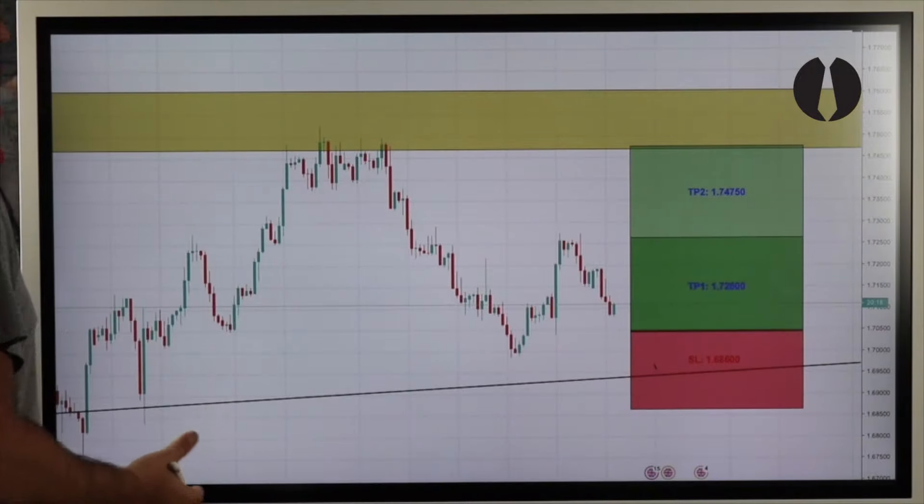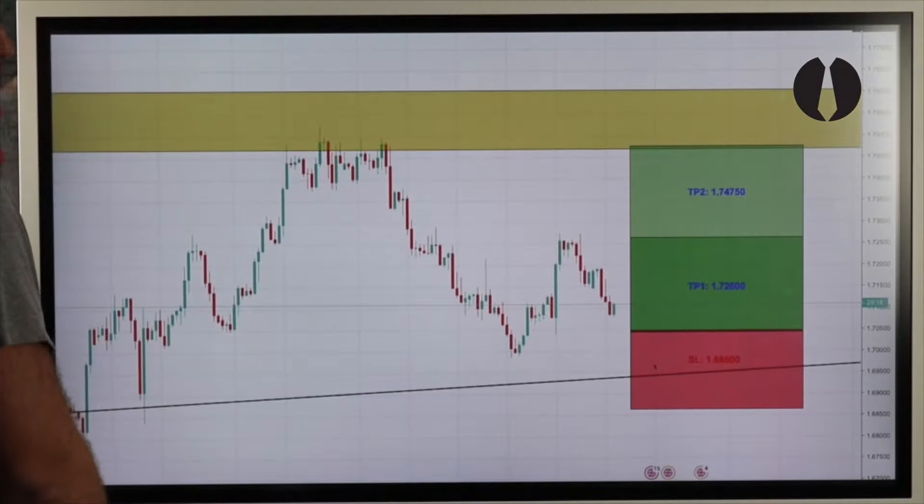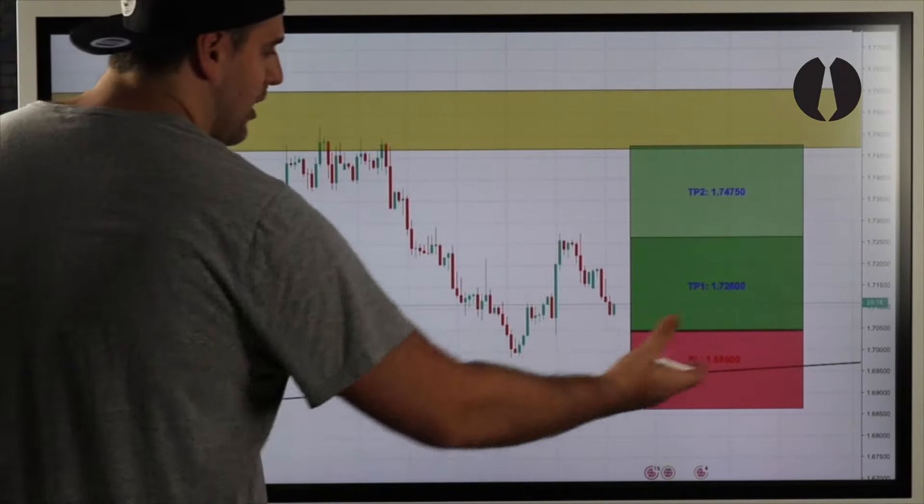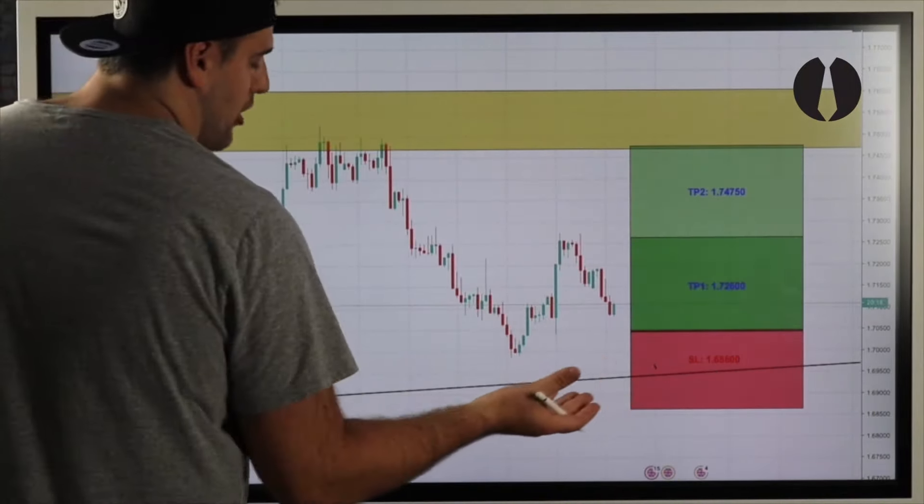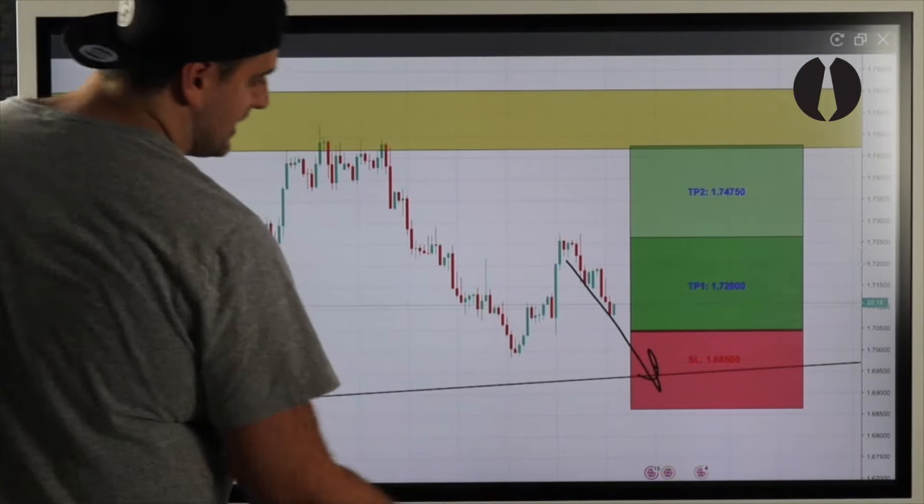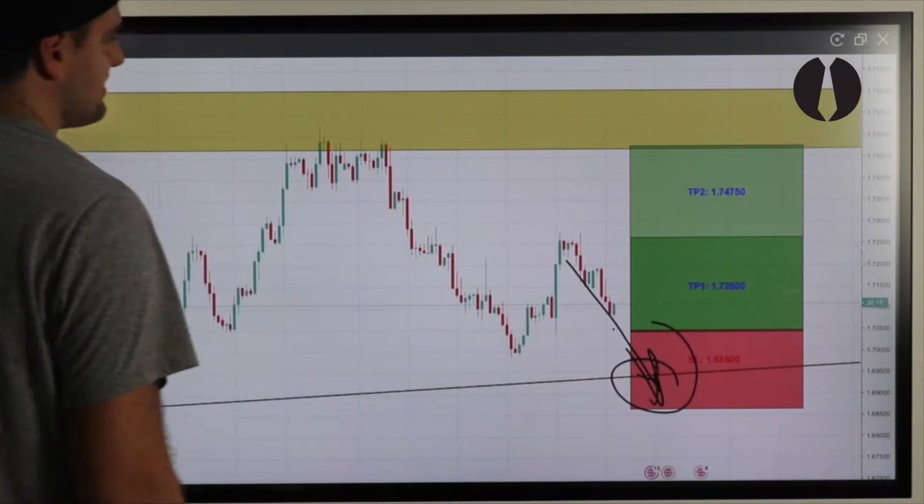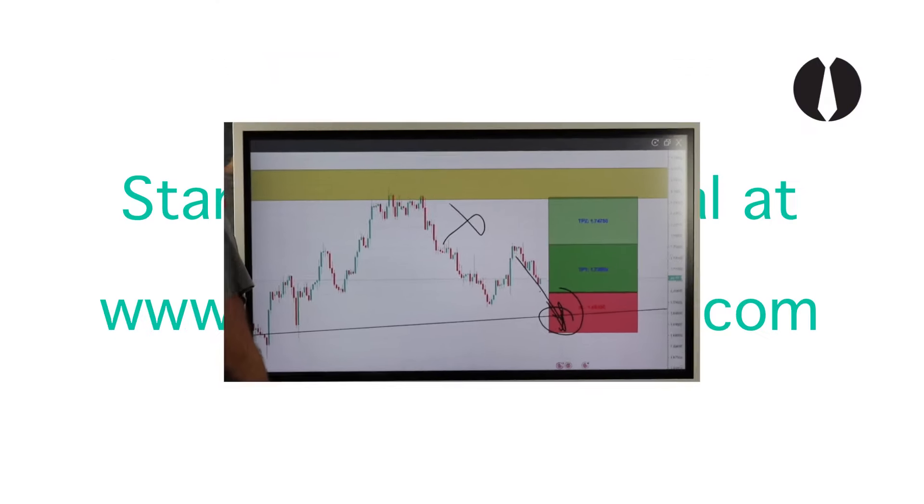What could potentially make this trade invalid? We know that price is eventually going to make a continuational push to the downside, meaning we have to be aware of this uptrend as this is where our buy sensitivity will take control. If price comes back to retest this uptrend and breaks below it, it tells us there's not enough buy sensitivity—this trade becomes invalid.